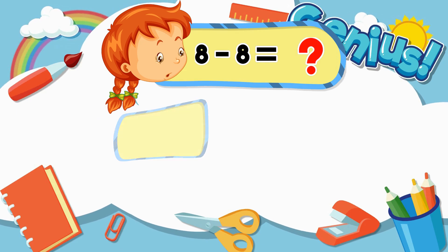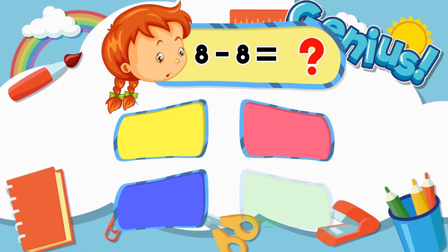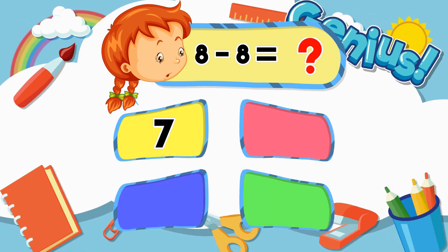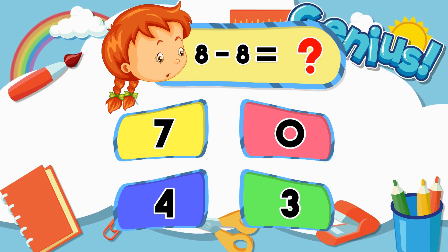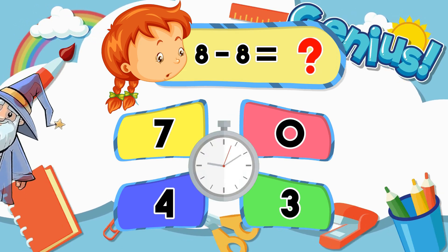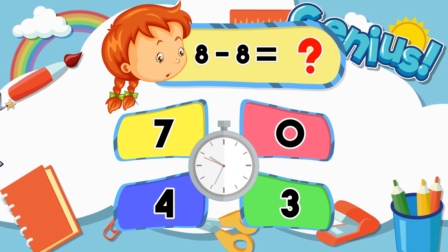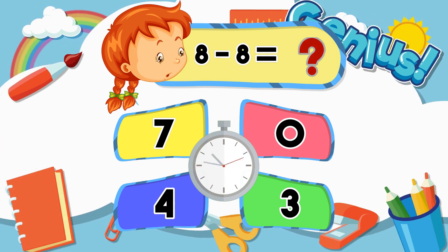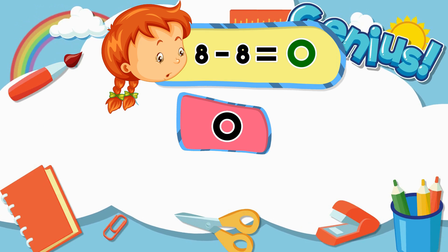What is 8 minus 8? 7, 0, 4, 3. Answer: 0.